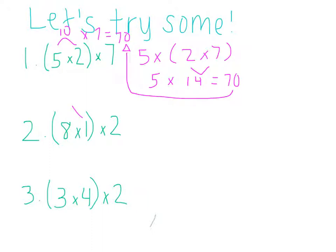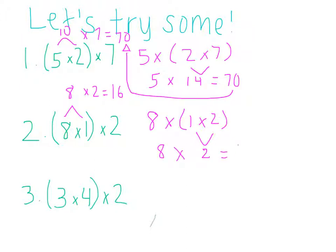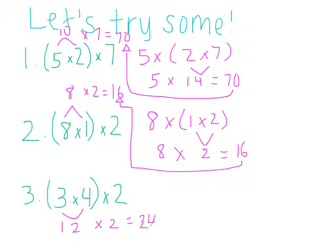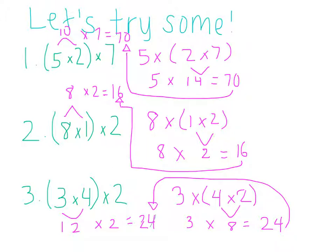For the second one, we have 8 times 1 is equal to 8, times 2 is equal to 16. If we change the groupings, we have 8 times 1 times 2 is equal to 2, times 8, which is also equal to 16 — same answer. For the last one, we have 4 times 3 is equal to 12, times 2 is equal to 24. If we change the groupings, we have 3 times 4 times 2 is equal to 8, times 3, which is also equal to 24 — same answer.